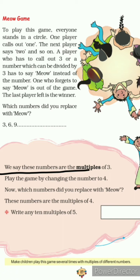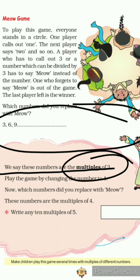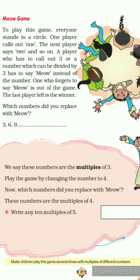We call these numbers the multiples of 3. Multiple is related to multiply — three ones are three, three twos are six, three threes are nine. So all numbers in the 3-times table are multiples of 3, and they are divisible by 3. Now play the game again changing the number to 4 — say 'mu' for 4, 8, 12, 16, 20, 24, 28, 32, and so on. Anyone who says the number instead of 'mu' is out.